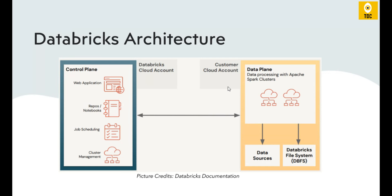The Data Plane is where your data is actually processed. You may create jobs in the Databricks UI, but please note that your jobs will never run in the Databricks cloud account — they will always run in the customer cloud account, whether that is Azure, GCP, or AWS. The actual compute power — CPU and memory — needed to run jobs and process data is consumed in the Data Plane, and your data is physically stored or fetched there as well.